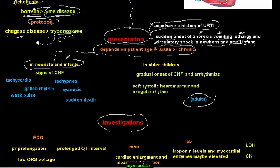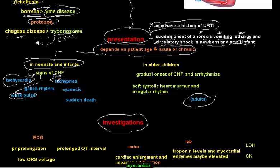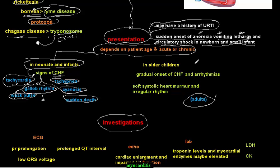In neonates and infants, signs of congestive heart failure appear mostly suddenly. These include weak pulse, tachycardia (compensatory), tachypnea, gallop rhythm — which is a summation of S3 and S4 — and cyanosis. Sudden death may be the first presentation of myocarditis in this age group.